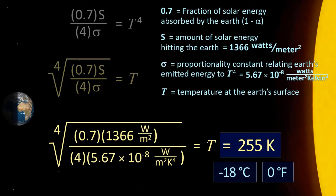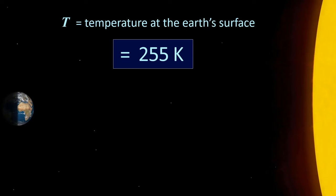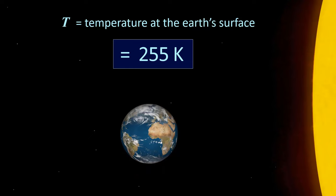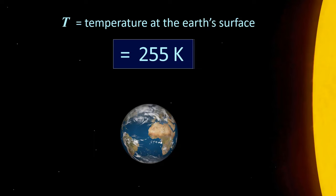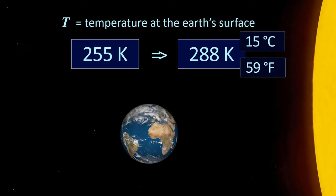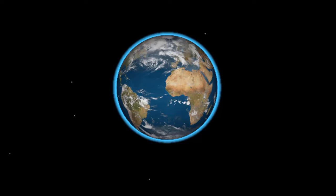However, there is a problem: 255 Kelvin is very cold — negative 18 Celsius, zero degrees Fahrenheit. If the Earth's surface were that temperature, it would be a frozen ball of ice. 255 Kelvin is 33 Kelvin less than the current average temperature of 288 Kelvin. What we're missing is the Earth's atmosphere. An atmosphere of 100% oxygen and nitrogen would not hold in any emitted infrared, so the surface would be that calculated 255 Kelvin. If the Earth were that cold, we would not be here trying to understand why it is warming.